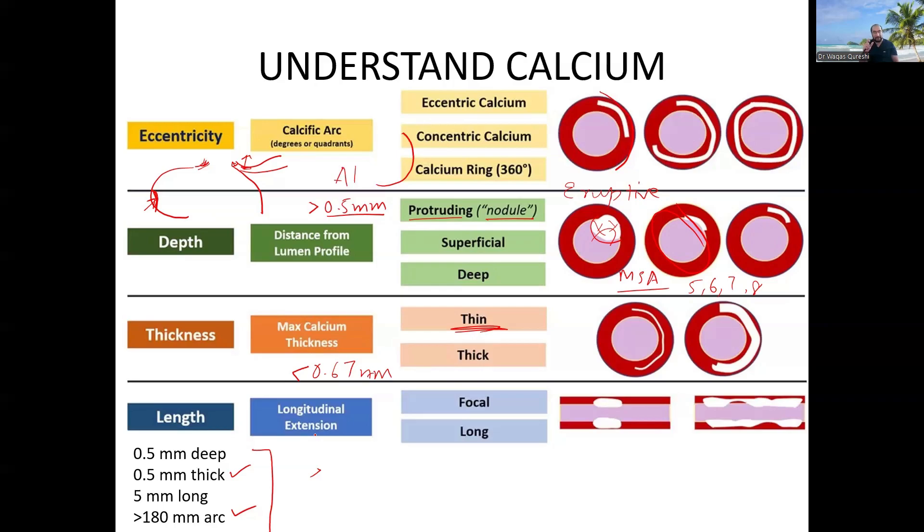Lastly, the length. The length more than 5 mm is unlikely to expand very well. Less than 5 mm, it is more likely to expand. I should also include here, ostial calcium is much more difficult to expand because of presence of fibrous tissue. There is much more fibrous tissue at the ostium, which can cause recoil.